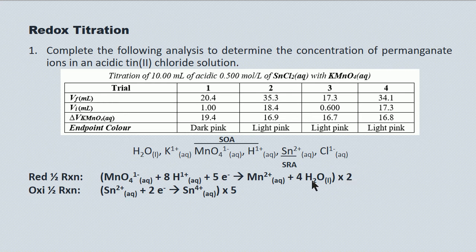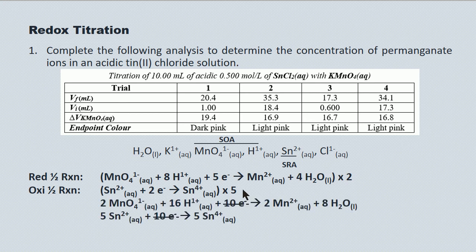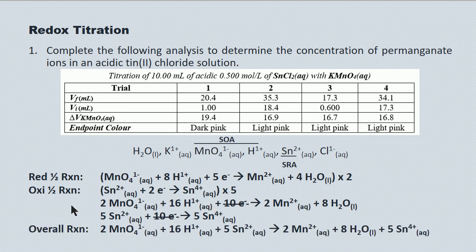We use multipliers — multiplying the reduction by 2 and the oxidation by 5 — to balance electrons. That gives us 10 electrons going into the reduction and 10 electrons coming out of the oxidation, so those cancel. Here's our overall redox reaction. From that work we can establish the stoichiometry: 5 tin(II) ions reacting with 2 permanganate ions. We'll need that ratio to do our titration calculations on concentration.